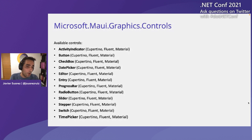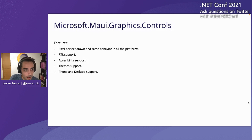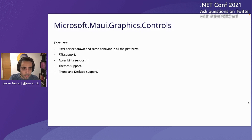What controls are available today? We are offering all the controls that you can use in Xamarin.Forms Visual: Activity Indicator, Button, CheckBox, DatePicker, etc. — all the controls you can see on screen. But instead of only using Material Design like in Xamarin.Forms, you can choose and switch between Cupertino, Fluent, and Material Design.